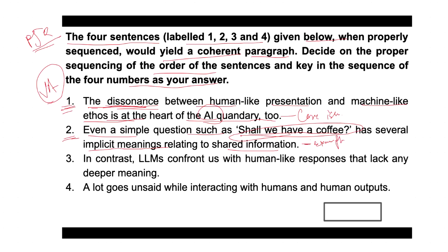Sentence three states: 'In contrast, LLMs confront us with human-like responses that lack any deeper meaning.' Sentence three discusses how large language models (LLMs) provide human-like responses but lack the deeper meaning that is present in human interaction — creating a contrast with human communication.